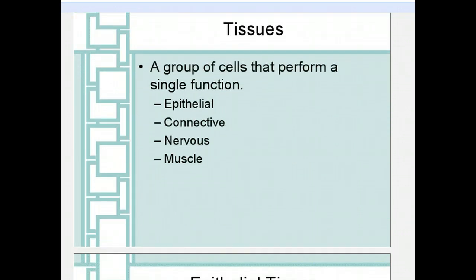Most things that have more than one cell eventually develop something called tissues. Tissues are a group of cells that perform a single function. In the body, we divide tissues into four categories: epithelial, connective, nervous, and muscle tissue. Next, we're going to talk about each of these four types of tissues in detail.